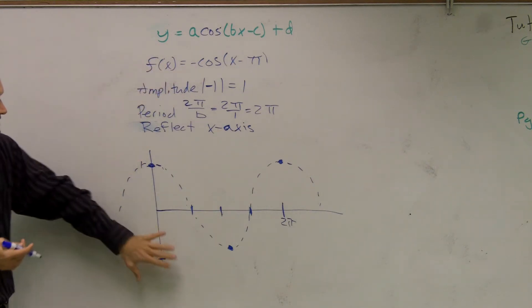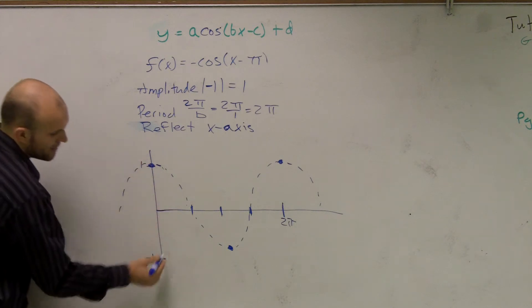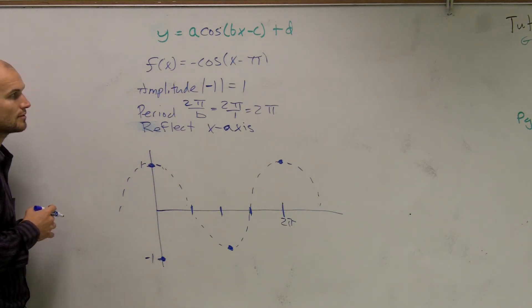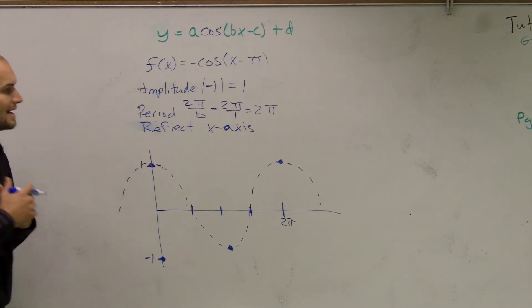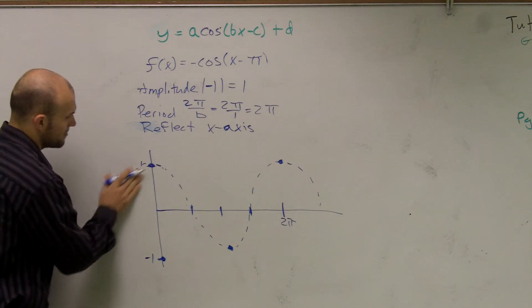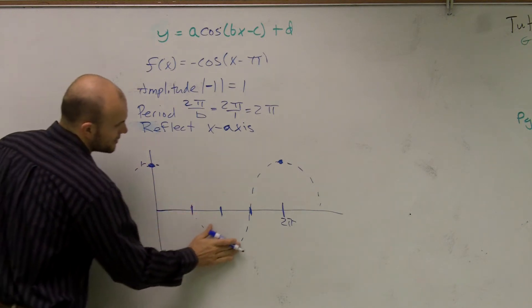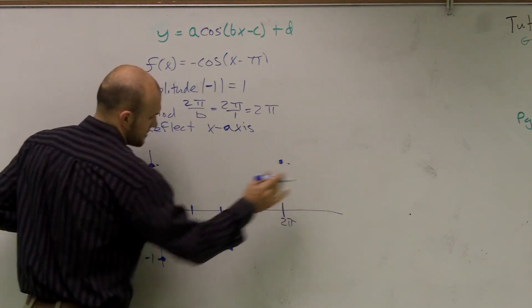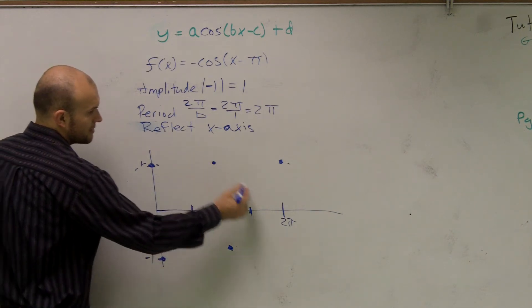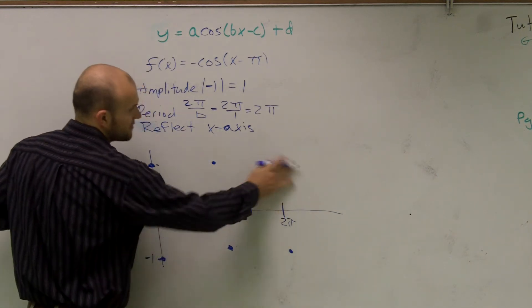However, one thing you guys notice is this is a reflection. So rather than starting up here, I need to flip this over. So now my graph is actually going to start down here. And my graph, rather than going like its parent graph, is going to start down here. And it's actually going to go up, cross, and then end down in this area.